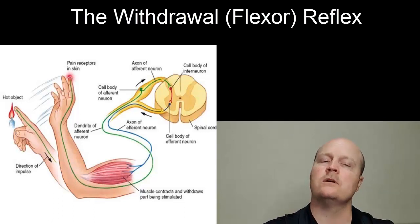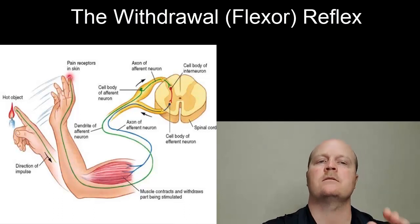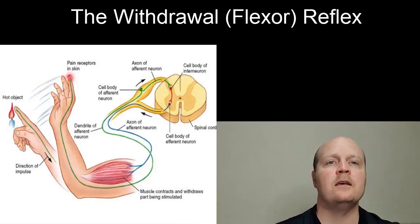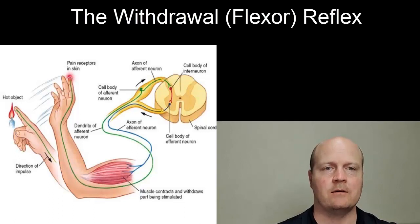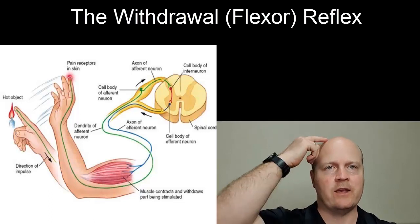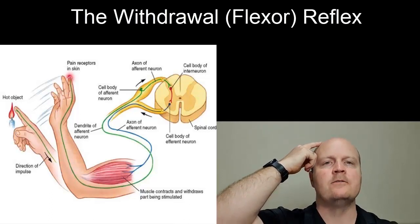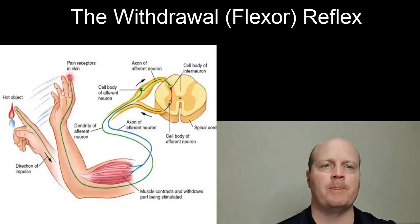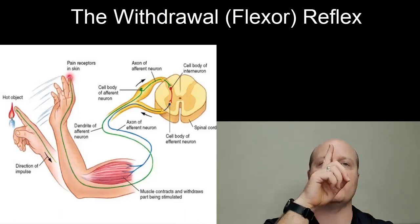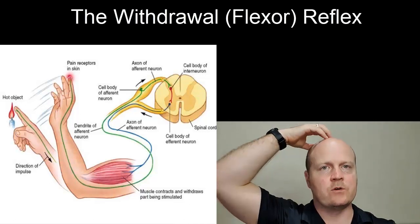The motor neuron goes to the effector, which is the muscle, to contract and pull away from that source of pain. Our reflexes are totally involuntary and automatic — we don't have to feel or perceive the pain for our reflex to occur. But while this is happening, another message is also sent up the spinal cord to the sensory cortex of the brain.